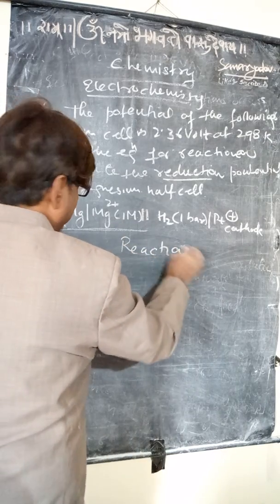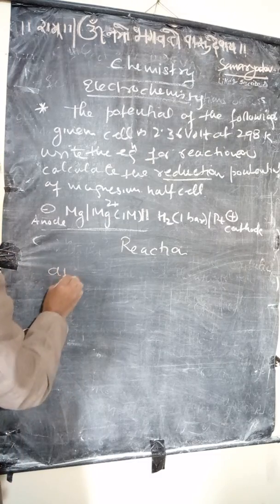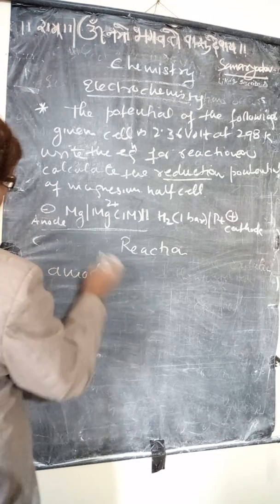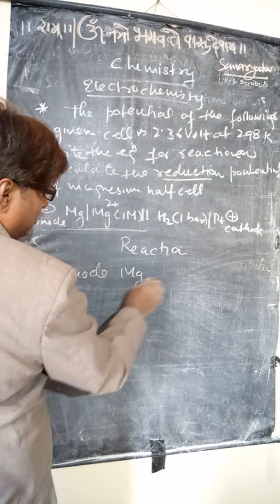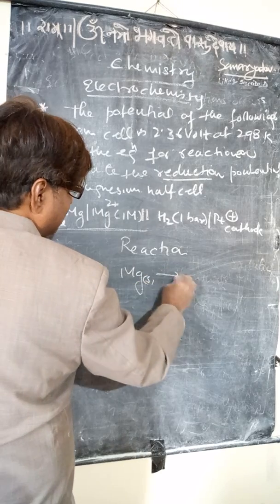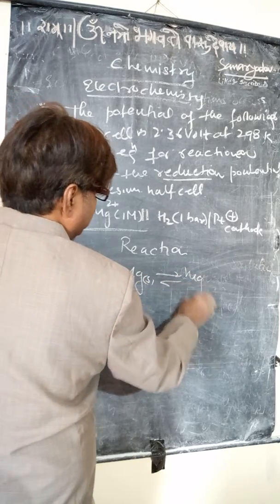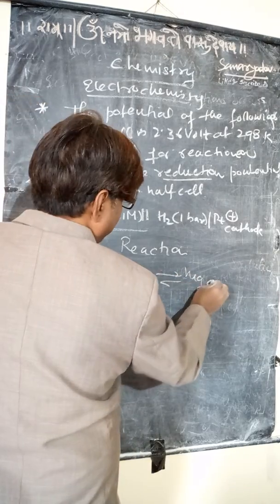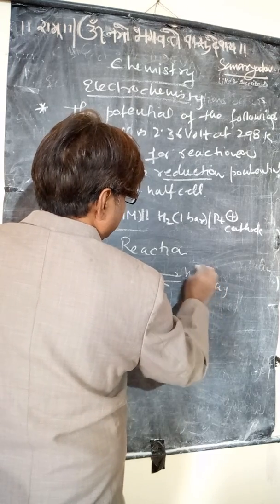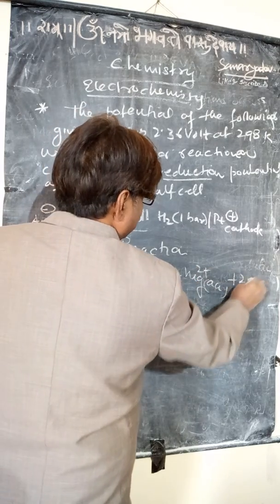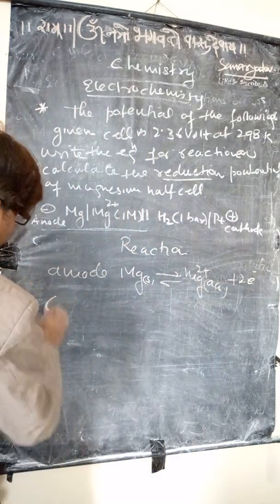The reaction at the anode: Mg solid gives Mg²⁺ aqueous plus 2 electrons.